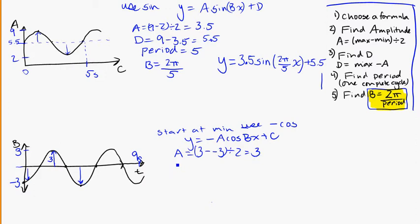Finding D, that's going to be our midline. Again, here you can actually see that it should be at zero, because it's centered there. But 3 minus 3, that's the max minus the amplitude, gives us zero. So we do see that D is in fact zero. And one last piece, finding the period.